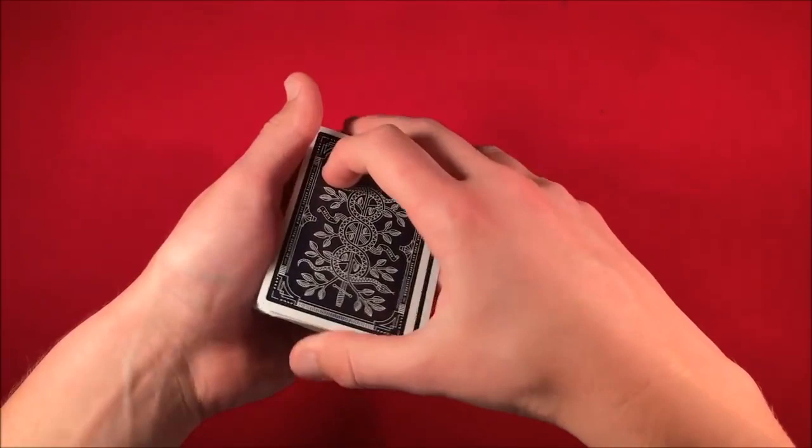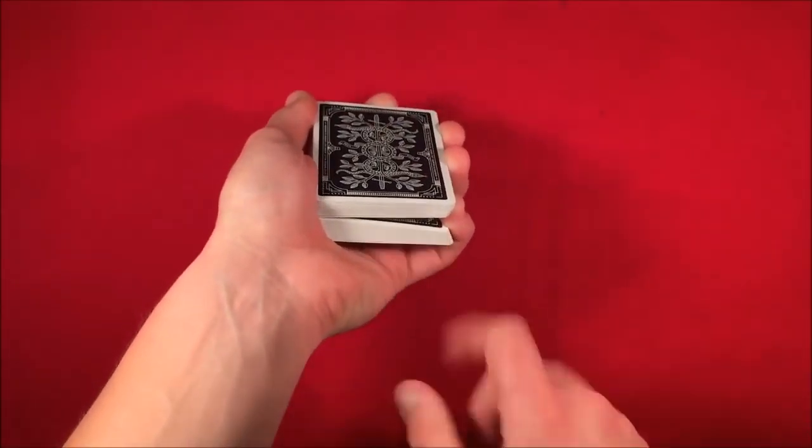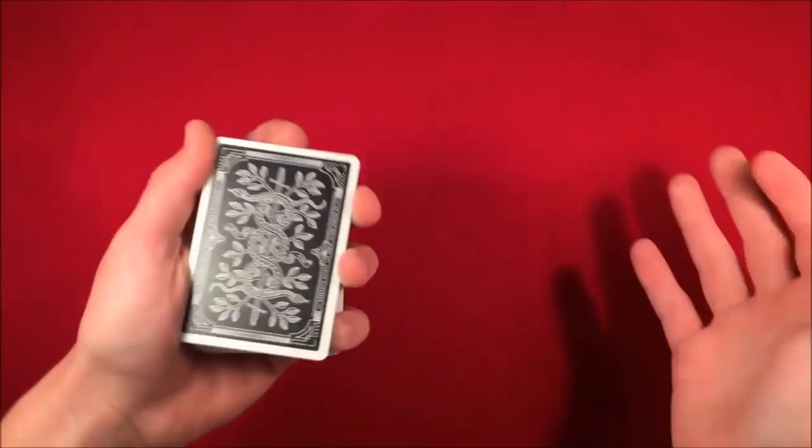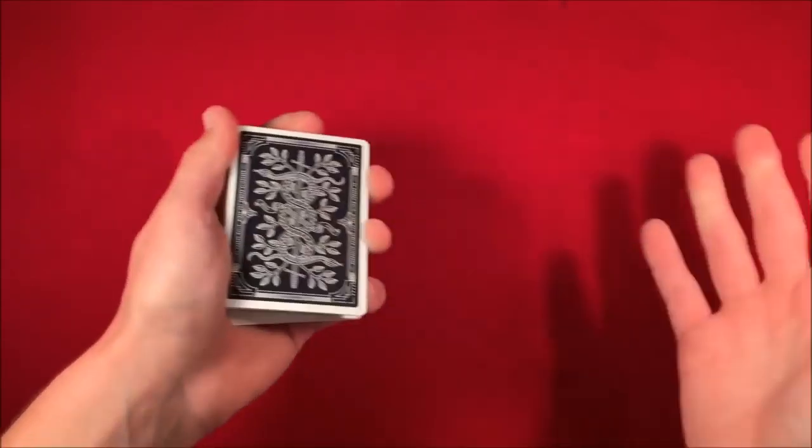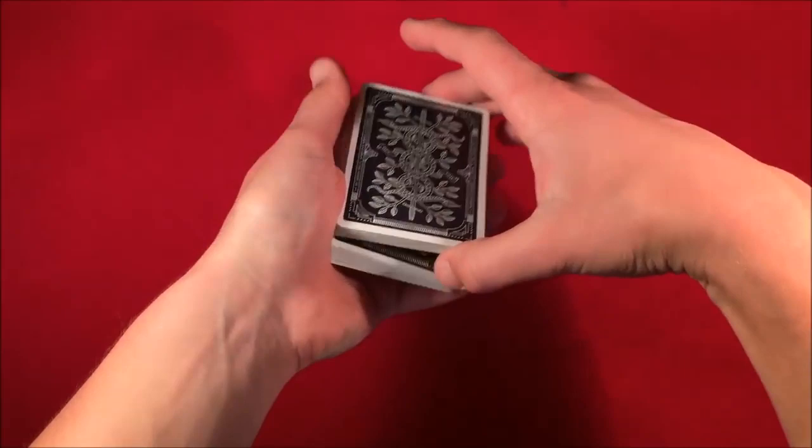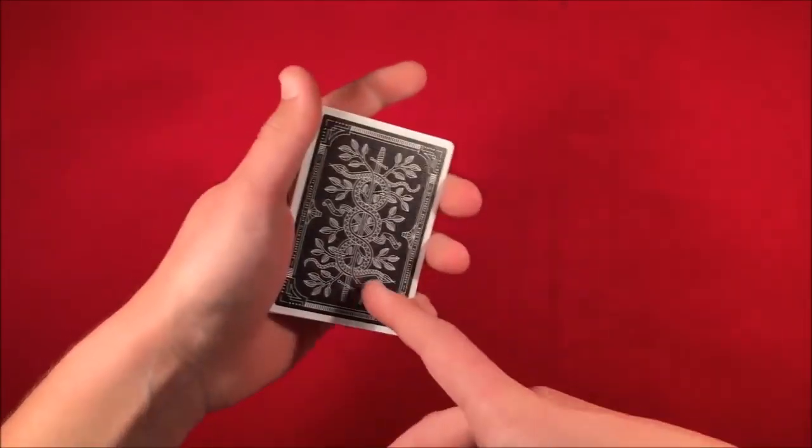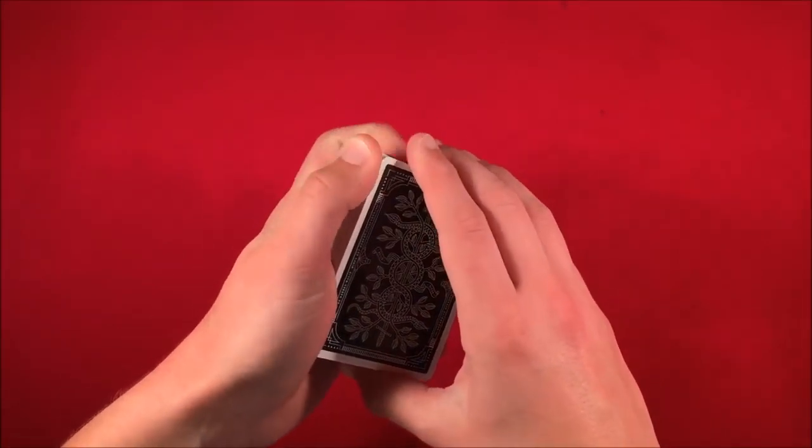So you take this 25 card packet and all you do is you get a break right above it, this way you have 25 cards broken at the bottom and the spectators can't see it. So all you have to do is tell spectators to say stop whenever they like and basically you're just doing a riffle force. So wherever they say stop you just take it from the break and then you can have them select the card.